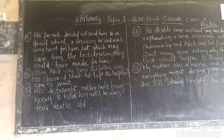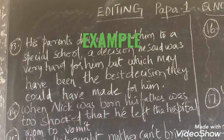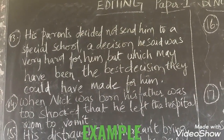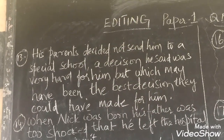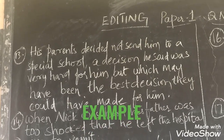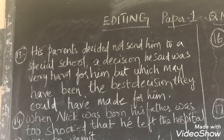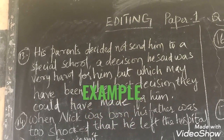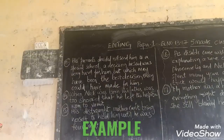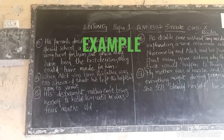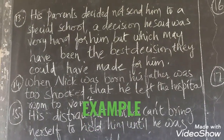His parents decided not sent him to a special school. If you read this sentence, you can easily find there is a word which is missing — a preposition is missing. Try to find out what that missing preposition is. Next, look at sentence 14: 'When Nick was born, his father was too shocked that he left the hospital room to vomit.' Here there is an excess or wrongly used word.